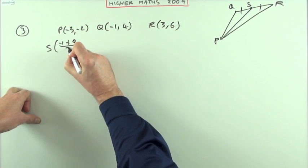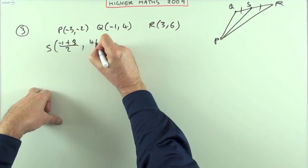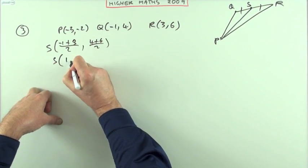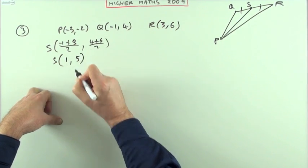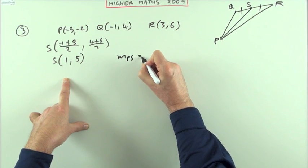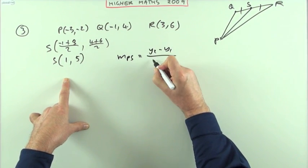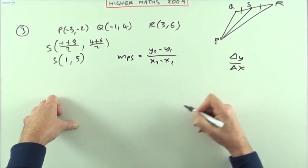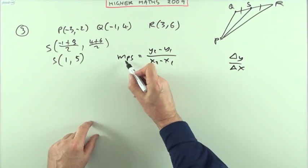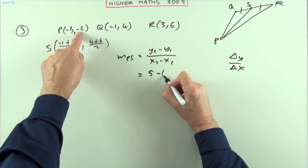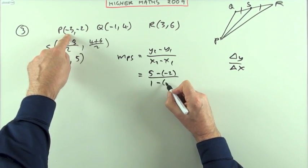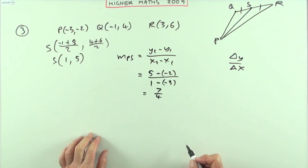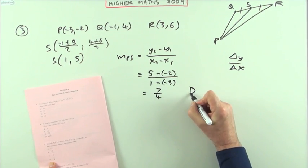Sometimes you can just look at it and think what's halfway, because it's obvious. What's halfway from −1 to 3? Add them and halve it. What's halfway from 4 to 6? Add them and halve it. So S, the midpoint of QR, is: 2 divided by 2 is 1, and 10 divided by 2 is 5. The gradient of PS will be (y2 − y1) / (x2 − x1) — difference in y over difference in x. Going from P to S: 5 take away −2 for the y coordinates, 1 take away −3 for the x coordinates — that makes 7 over 4. So the answer is 7/4, which is answer D.